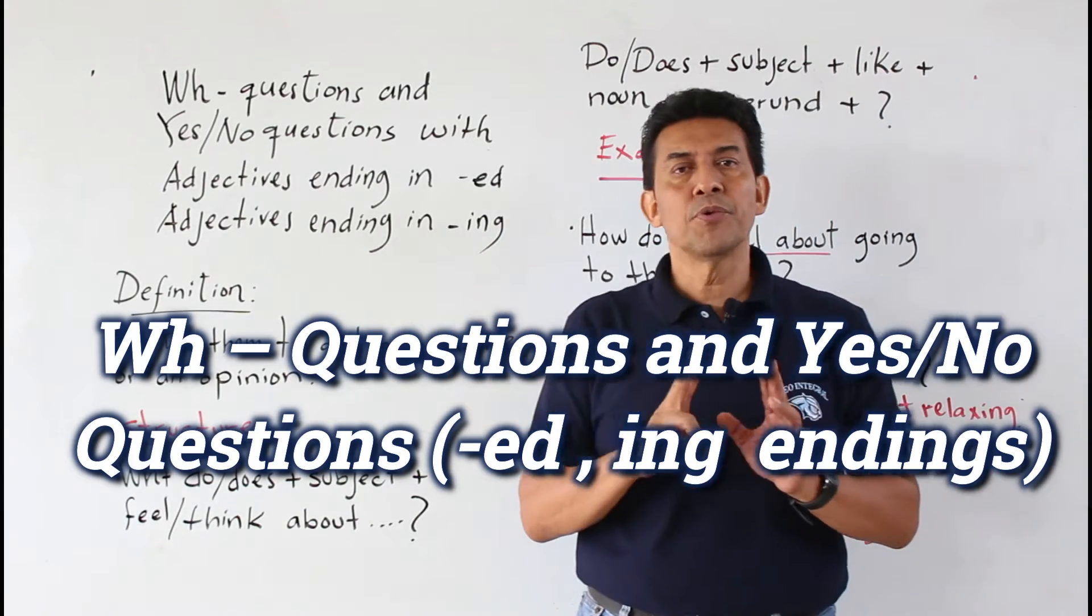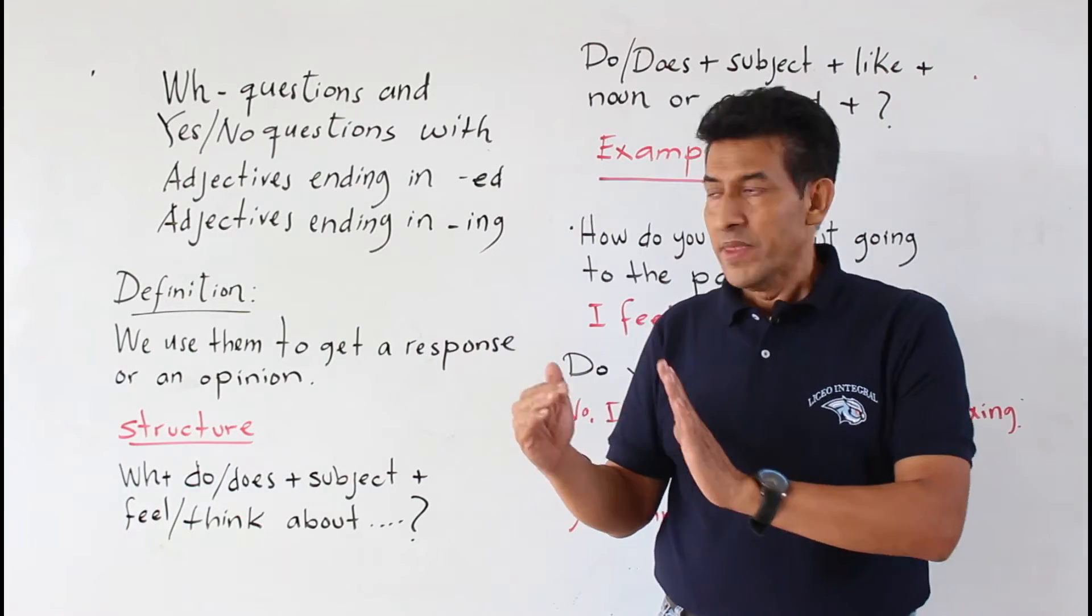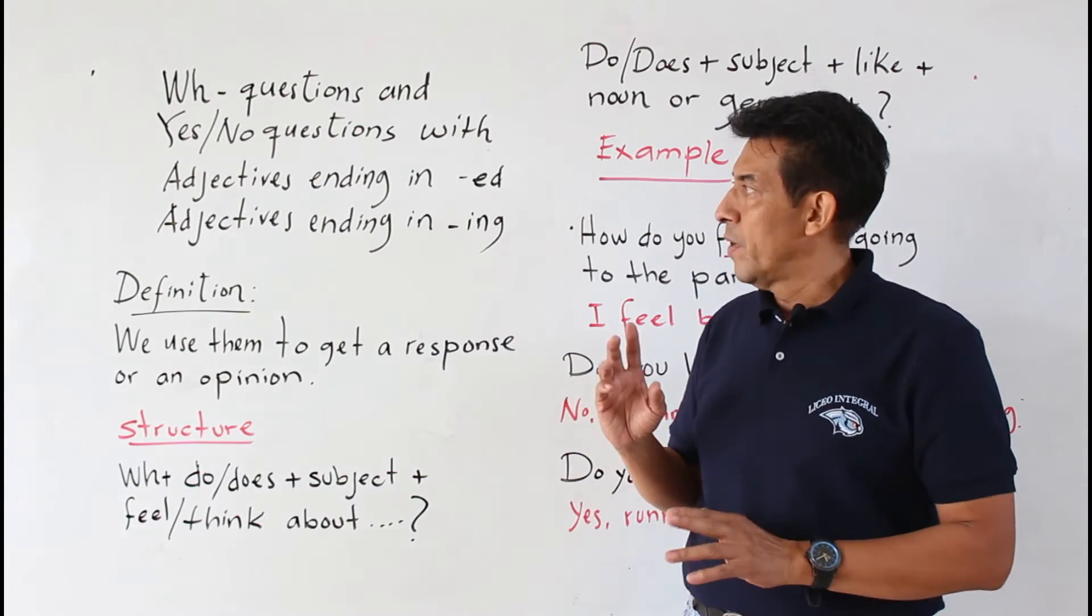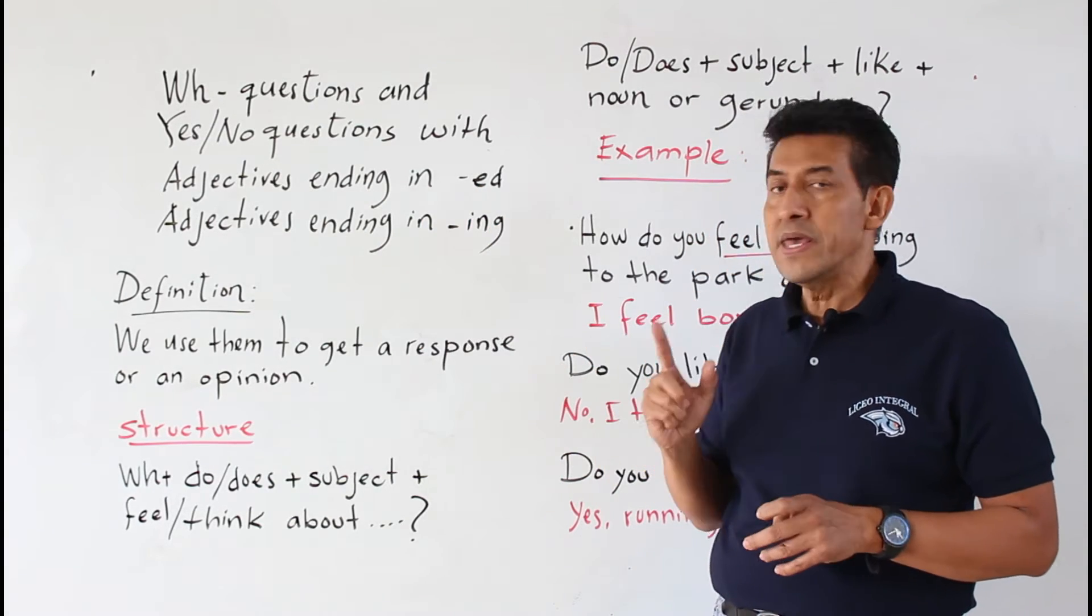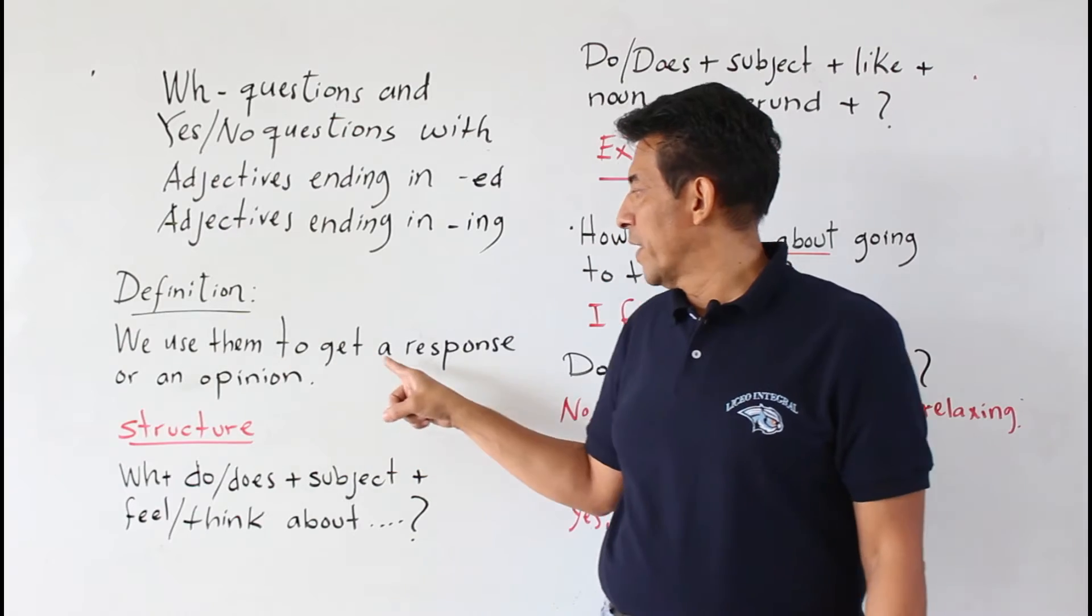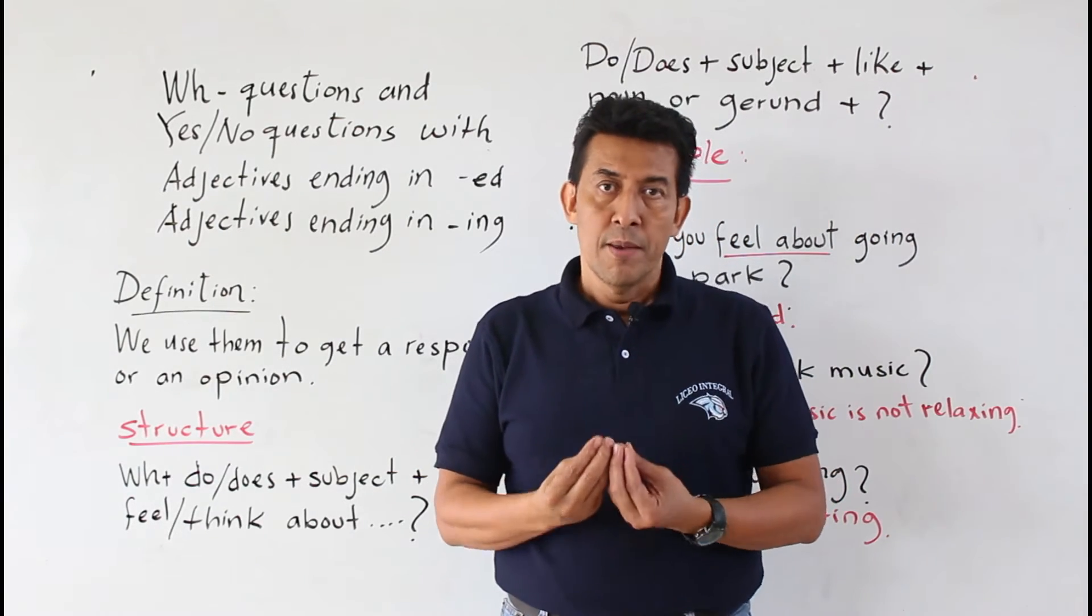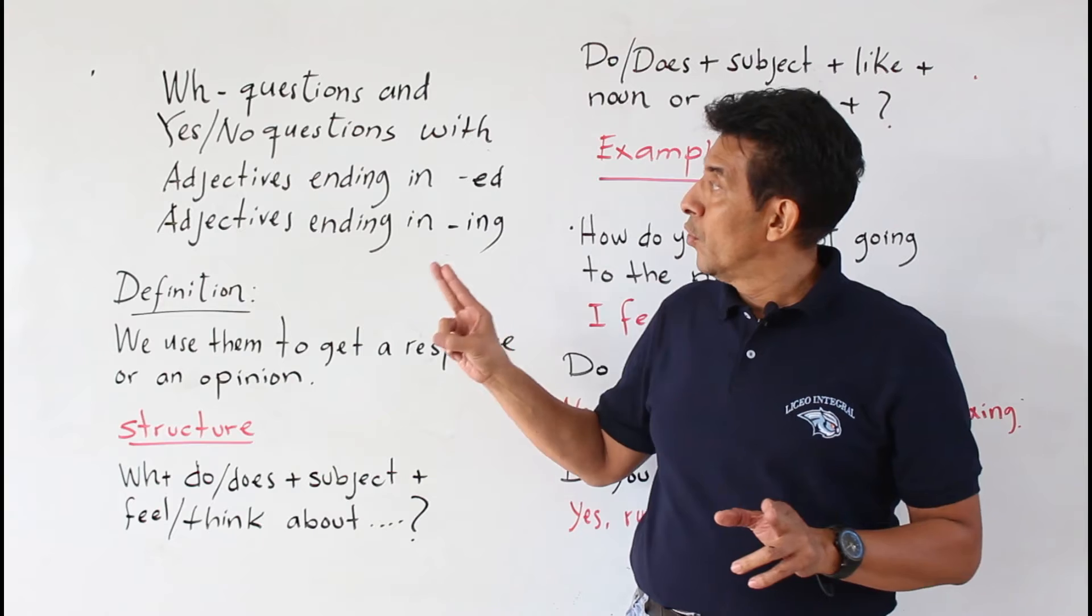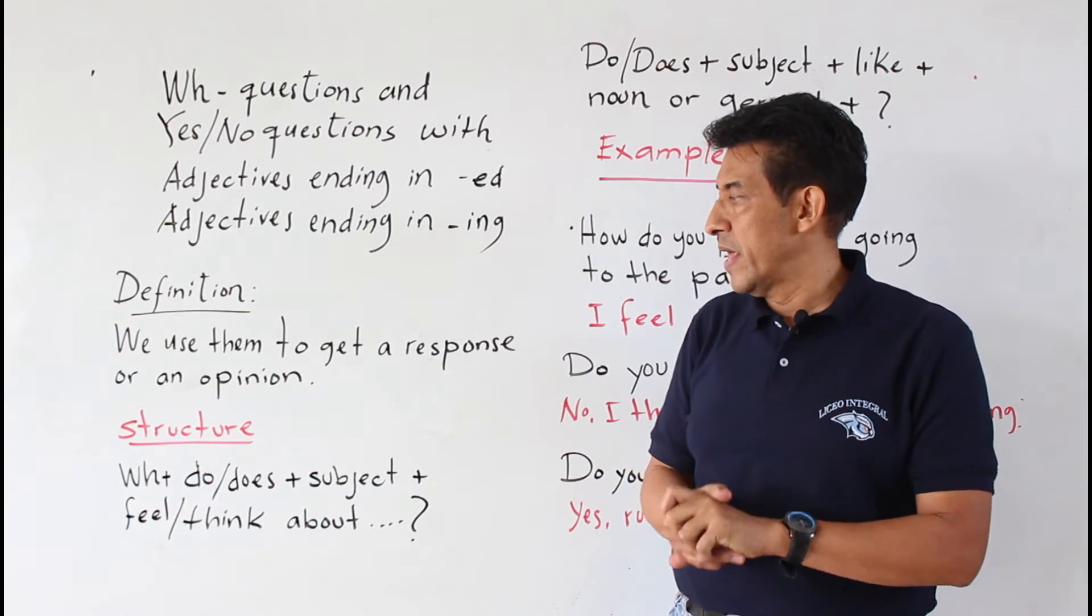Vamos a ver dos tipos de preguntas en esta oportunidad, las WH-questions y las yes-no-questions, utilizando adjetivos que terminan en -ed y adjetivos que terminan en -ing. Y la definición es que los usamos para obtener ya sea una respuesta o una opinión, utilizando los adjetivos ending in -ing y los adjetivos que finalizan en -ing.